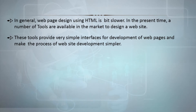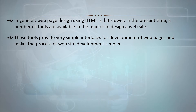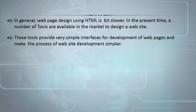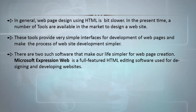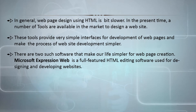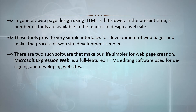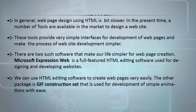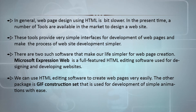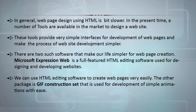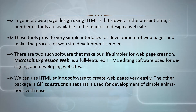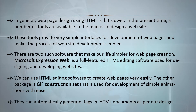To make our process of website development simpler, we have to select a tool which we can master in less time and very easily. There are two such software that make life simpler for web page creation. One is Microsoft Expression Web — a full-featured HTML editing software used for designing and developing websites. The other package is GIF Construction Set, which is used for development of simple animations. They can automatically generate tags in HTML documents as per our design.